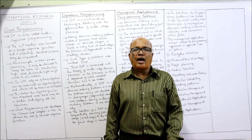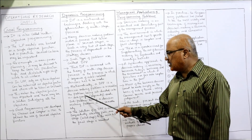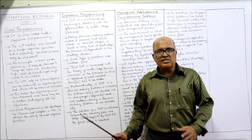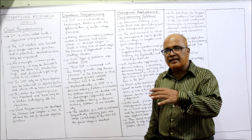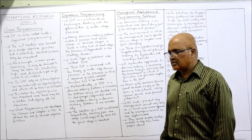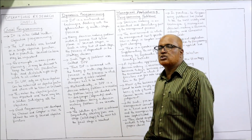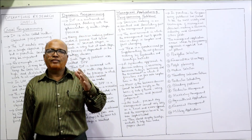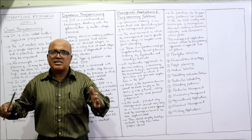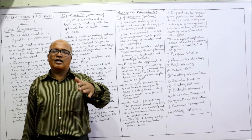Dynamic programming is concerned with the theory of multi-stage decision processes — a process in which a sequence of interrelated decisions has to be made, with interrelationships between stages at every step. Mathematically, a DPP is a decision-making problem in n variables, subdivided into n sub-problems, each being a decision-making problem in one variable only. The solution of a DPP is achieved sequentially, starting from the first stage through to the final stage.